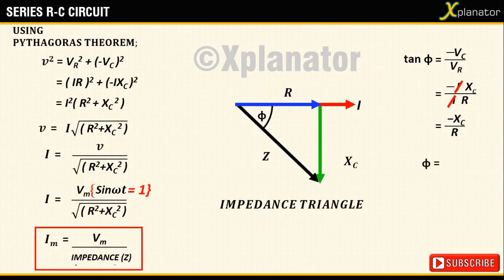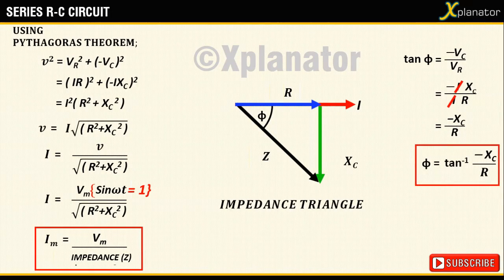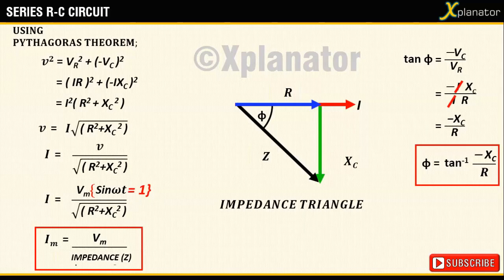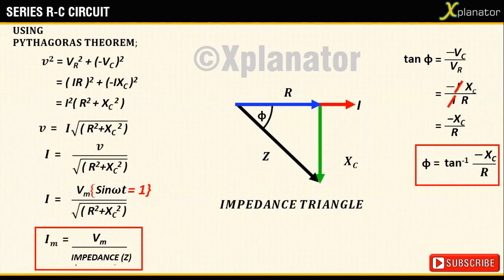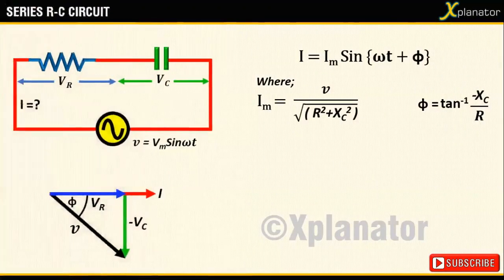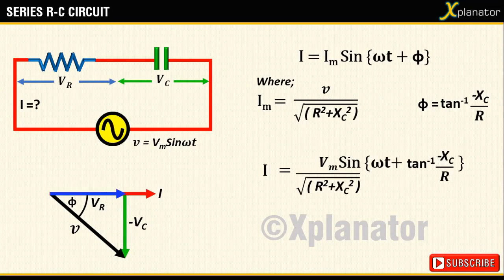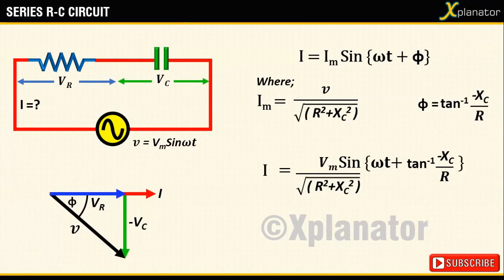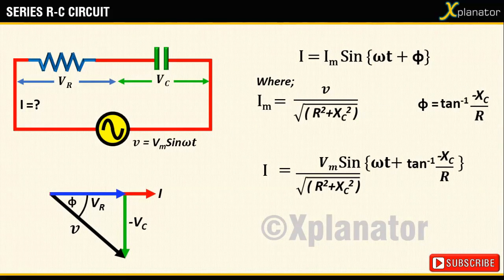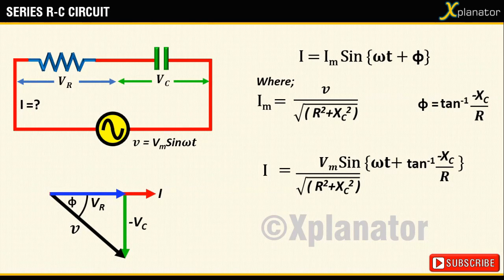So, phi is given as tan inverse of -Xc upon R. The negative angle means voltage lags current. You can also say that current leads the voltage. It means one and the same. The final value for current in a series RC circuit can now be written as Vm divided by root of R² plus Xc² multiplied by sin of ωt plus tan inverse of -Xc upon R.